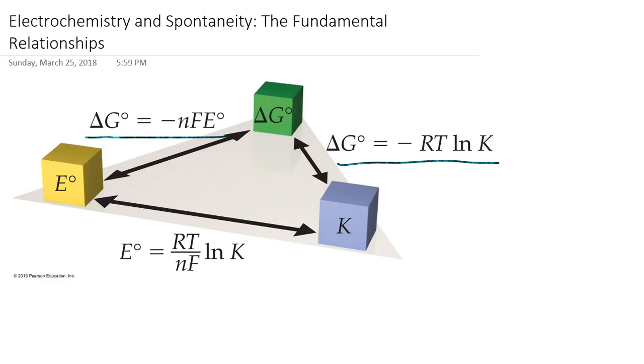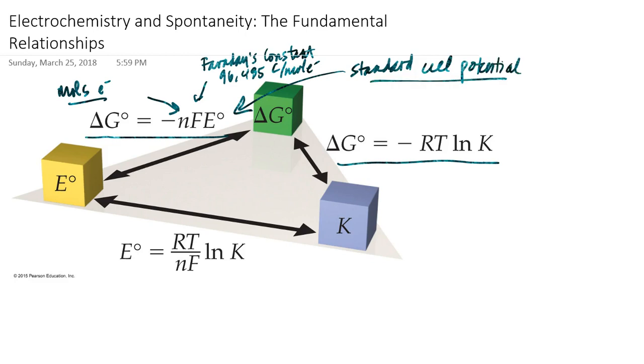Just to clarify, N represents the number of moles of electrons involved in the electrochemical process. F is the Faraday constant or Faraday's constant, which is 96,485 Coulombs per mole of electrons, and E standard is the standard cell potential. We're able to predict the spontaneity of an electrochemical process by relating it directly to Gibbs free energy through this equation.